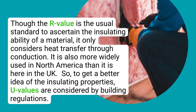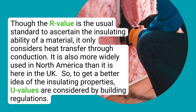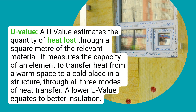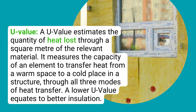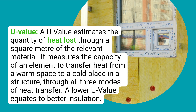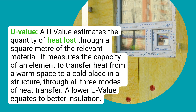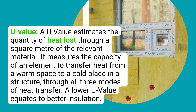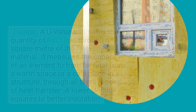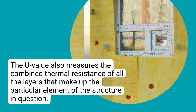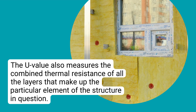To get a better idea of the insulating properties, U-values are considered by building regulations. A U-value estimates the quantity of heat lost through a square meter of the relevant material. It measures the capacity of an element to transfer heat from a warm space to a cold place in a structure, through all three modes of heat transfer. A lower U-value equates to better insulation. The U-value also measures the combined thermal resistance of all the layers that make up the particular element of the structure in question.